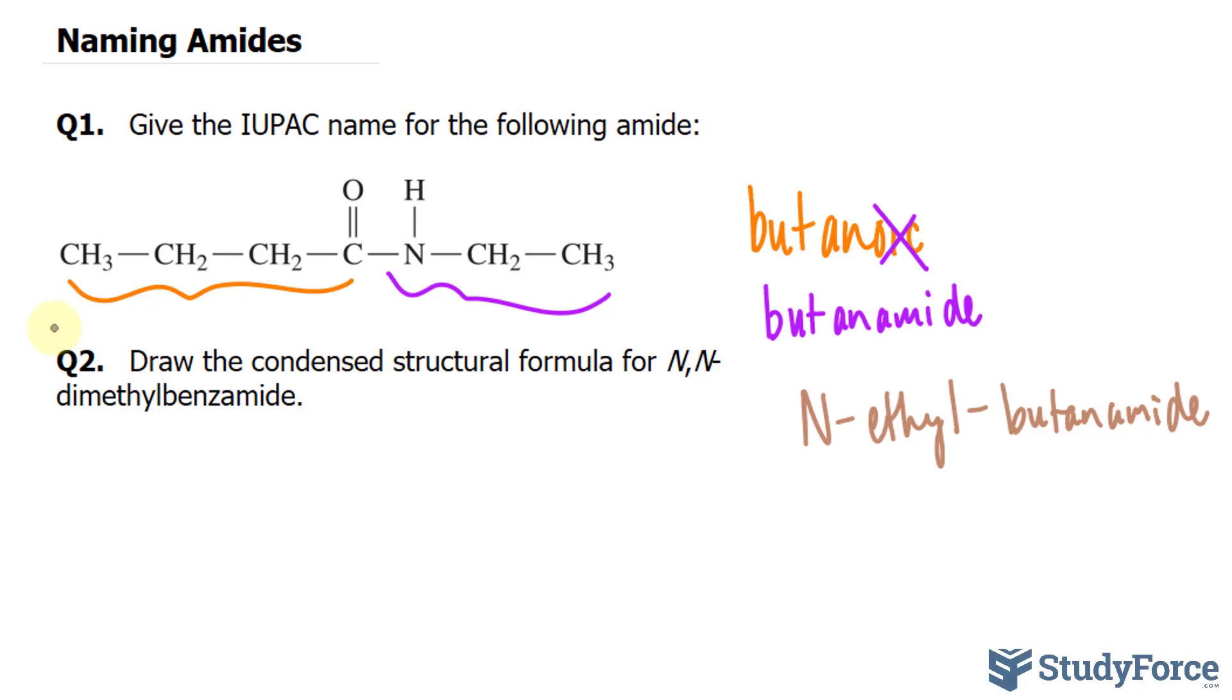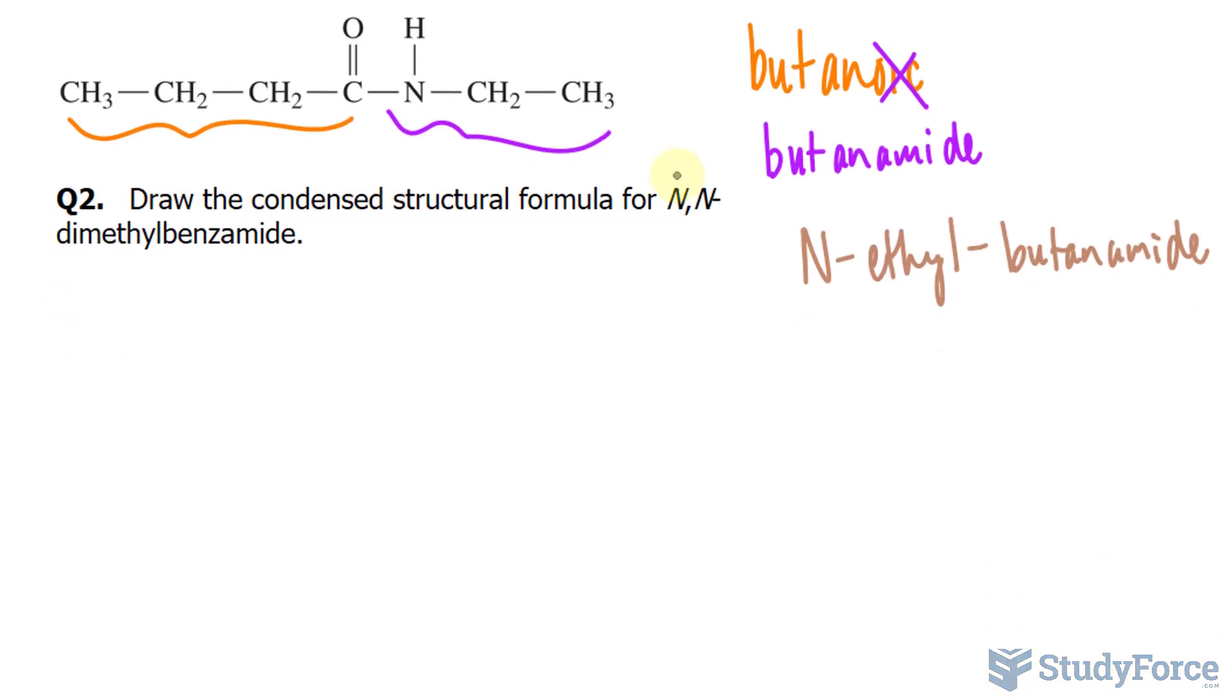In the next question, draw the condensed structural formula for N,N-dimethylbenzamide. So, because we have these two N's here, that specifies two substituents on the nitrogen atom. And the two substituents are the two methyl groups.